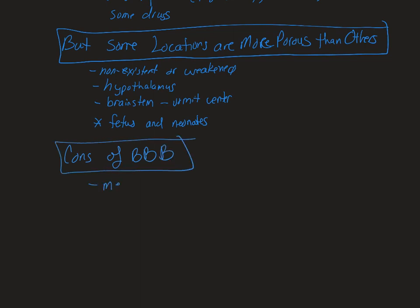What are the cons of your blood-brain barrier? Well, certain medicines cannot cross — that's probably one of the biggest ones we face. Certain antibiotics and certain cancer medications can't cross the blood-brain barrier, so we're trying to figure out how do you treat a brain tumor or a bacterial infection in the brain if you can't get the antibiotics to it. The other thing is that you can damage this blood-brain barrier — any kind of trauma or inflammation can cause degradation of the blood-brain barrier itself, and then things can leak through and you can get pathogens into the brain that you don't want there.